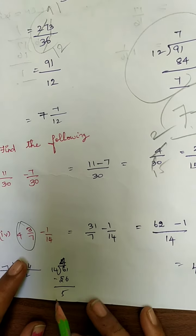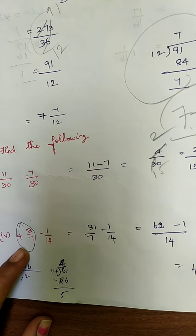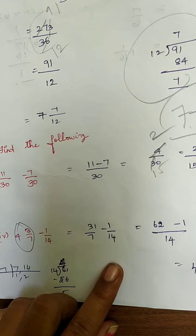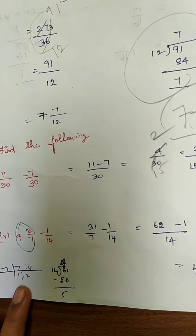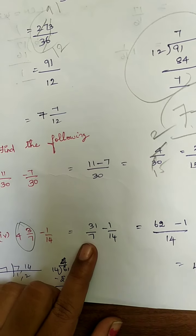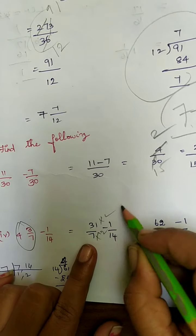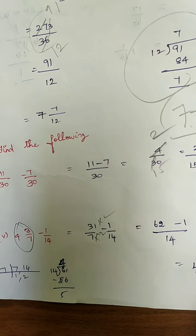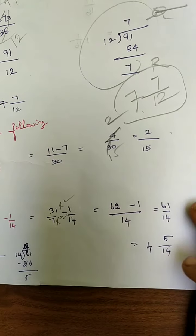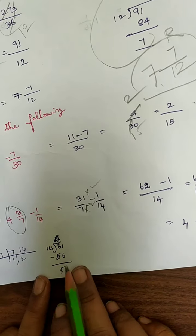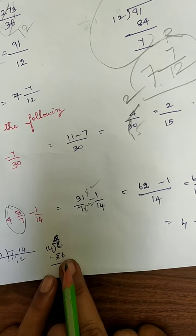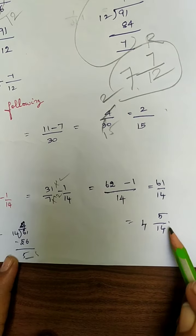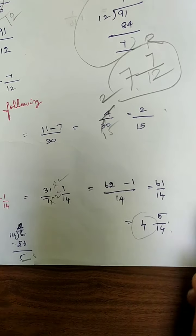Next, you have one term as a mixed fraction: 7 fours are 28, plus 3 is 31, so 31 by 7. And 1 by 14. Taking LCM: LCM is 14. To make 7 into 14, multiply by 2 — both numerator and denominator. It is 62 minus 1 divided by 14 is 61 by 14. This is an improper fraction. Converting to a mixed fraction: 14 fours are 56, remainder is 5. Still 5 not divided by 14, so the answer is 4 and 5 by 14.